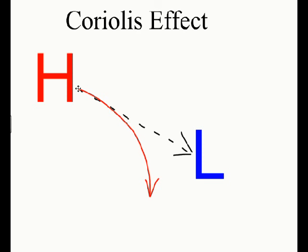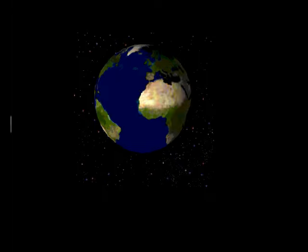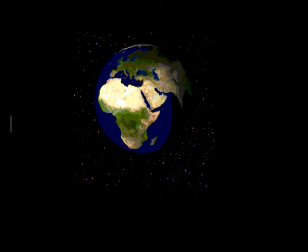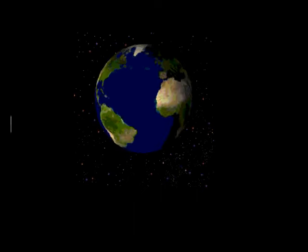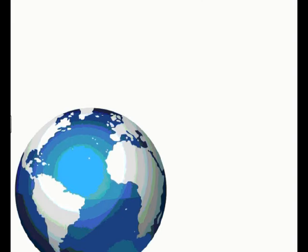Here's a definition for your notes: the wind appears to curve due to the Earth's rotation. That's why this curve happens — it's all because the Earth is spinning. If the Earth wasn't spinning, the wind would move straight from high pressure to low pressure and we wouldn't see this apparent curve.